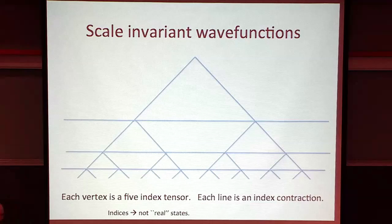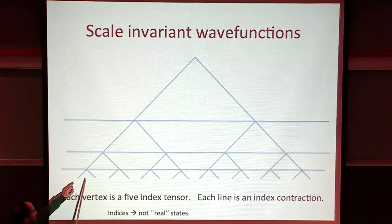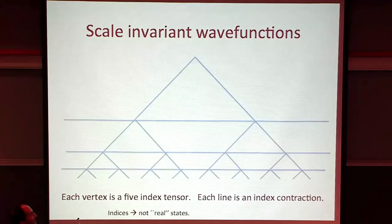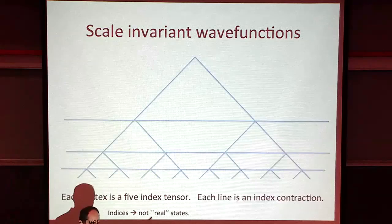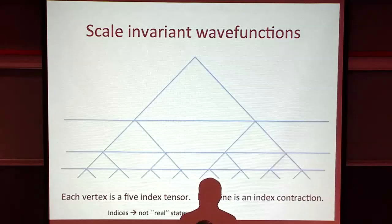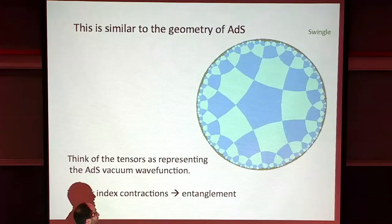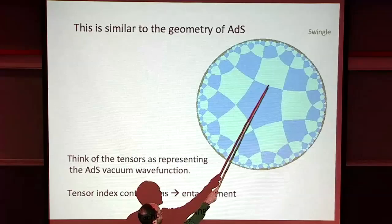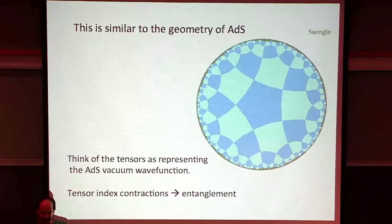The bottom lines are the spins, and you have all these tensors. The figure continues to the left and could continue infinitely into the interior. That is supposed to give a good representation for systems that are scale-invariant. This is similar to the geometry of ADS, where each tensor represents one patch of size of the AdS radius.